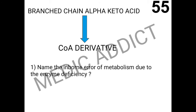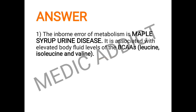The next spot shows a conversion of the BCAA alpha-keto acid into the CoA derivative. We have to name the inborn error of metabolism due to the enzyme deficiency — that is, the enzyme required for conversion of the branched-chain alpha-keto acid into a CoA derivative is absent. The given inborn error of metabolism is Maple Syrup Urine Disease (MSUD), associated with elevated body fluid levels of branched-chain amino acids: leucine, isoleucine, and valine.